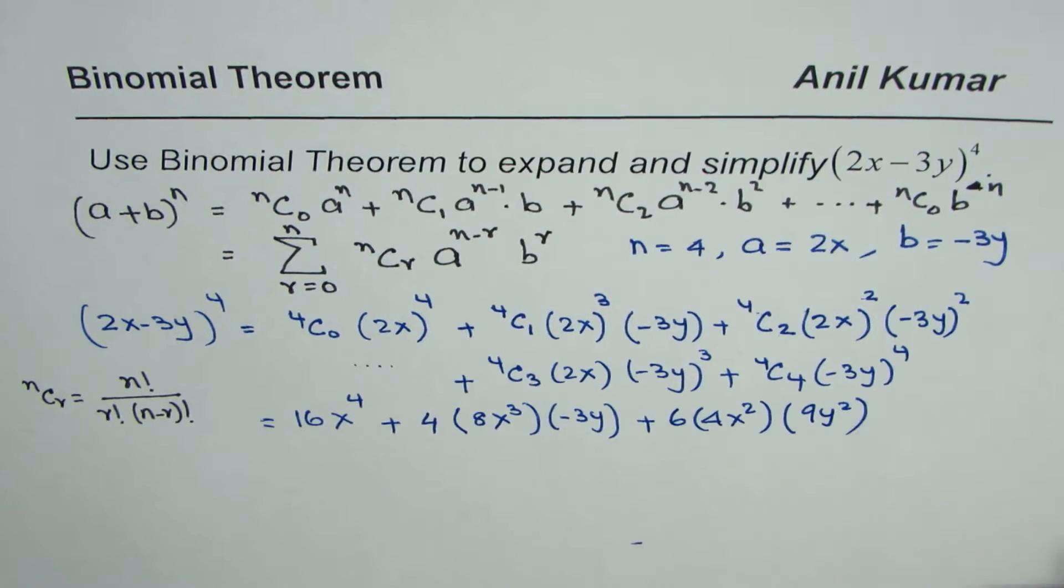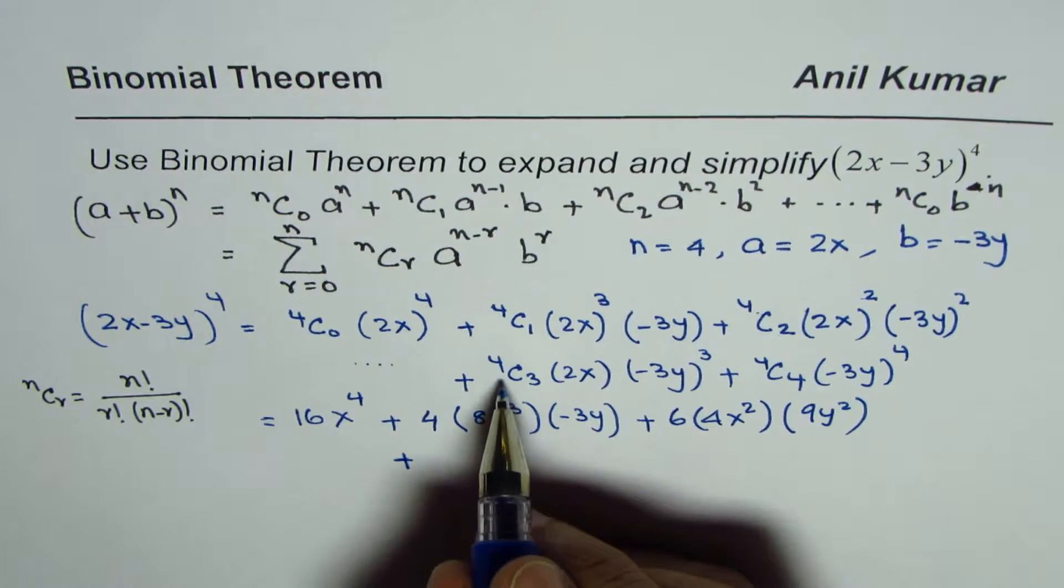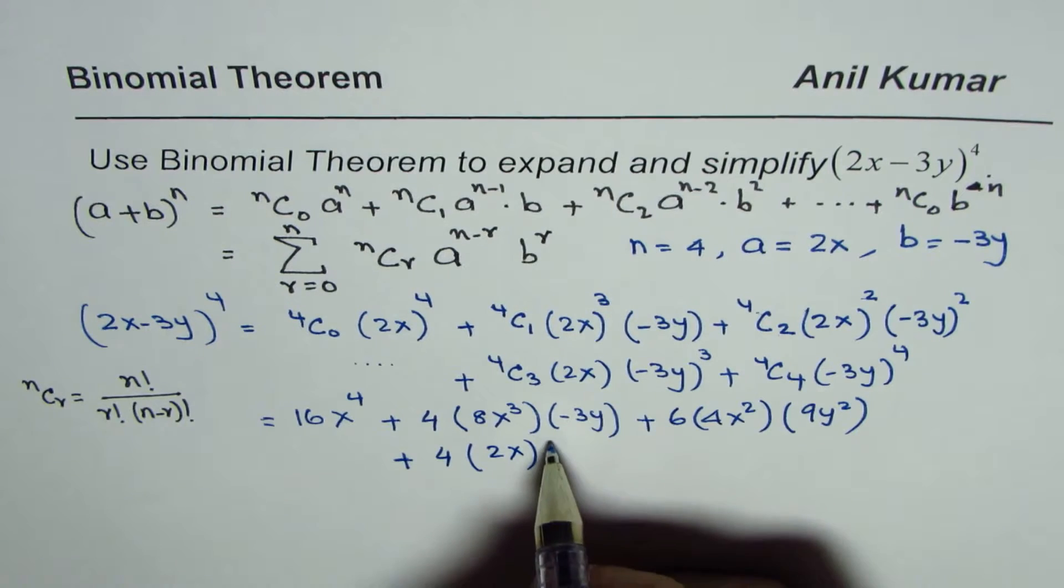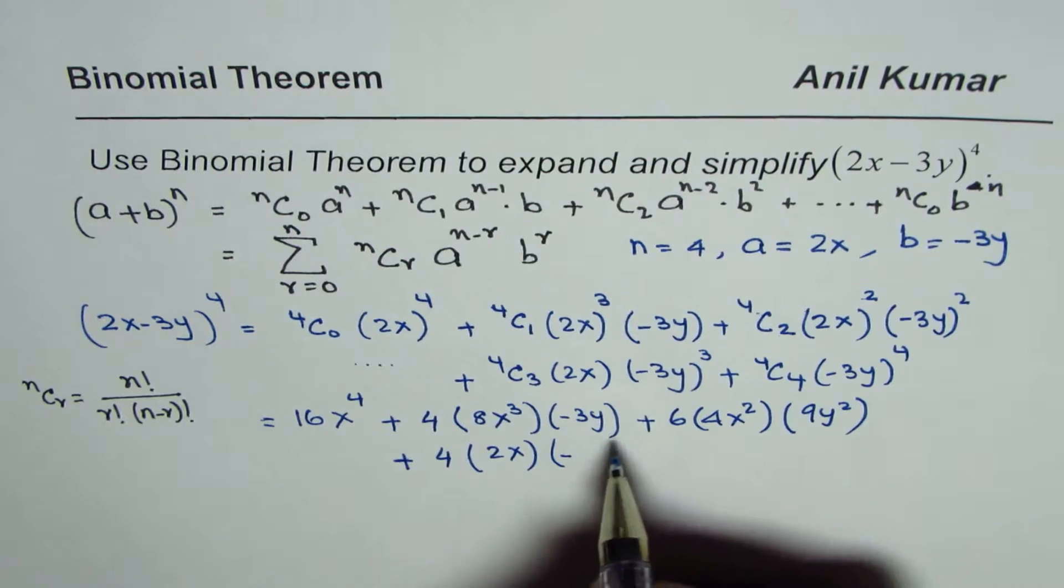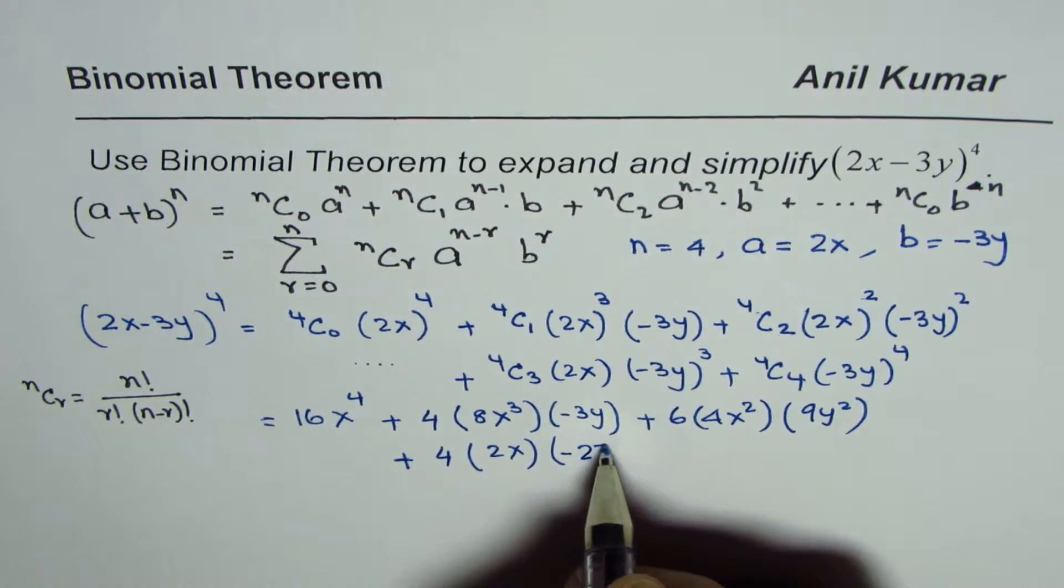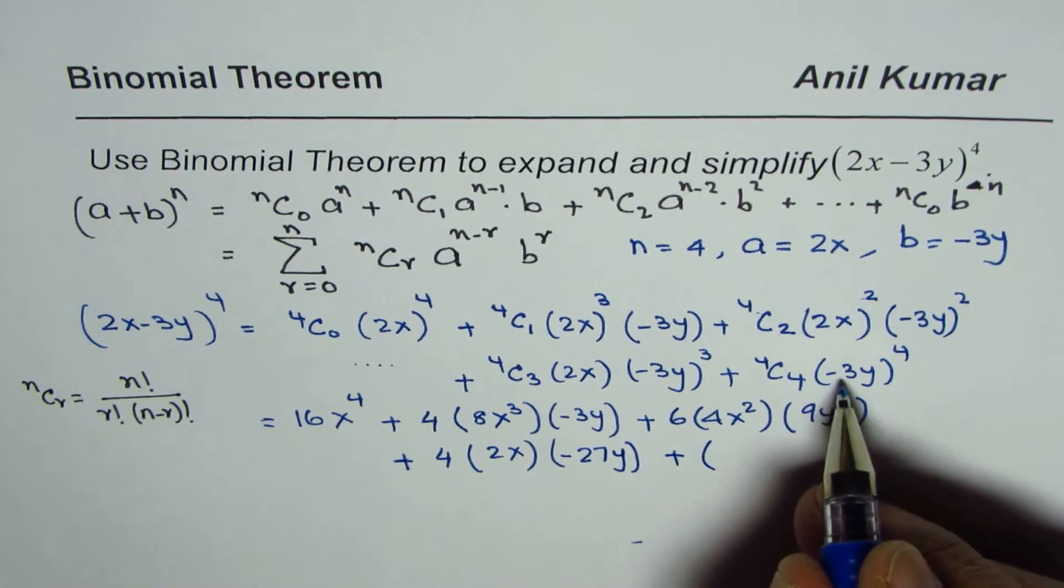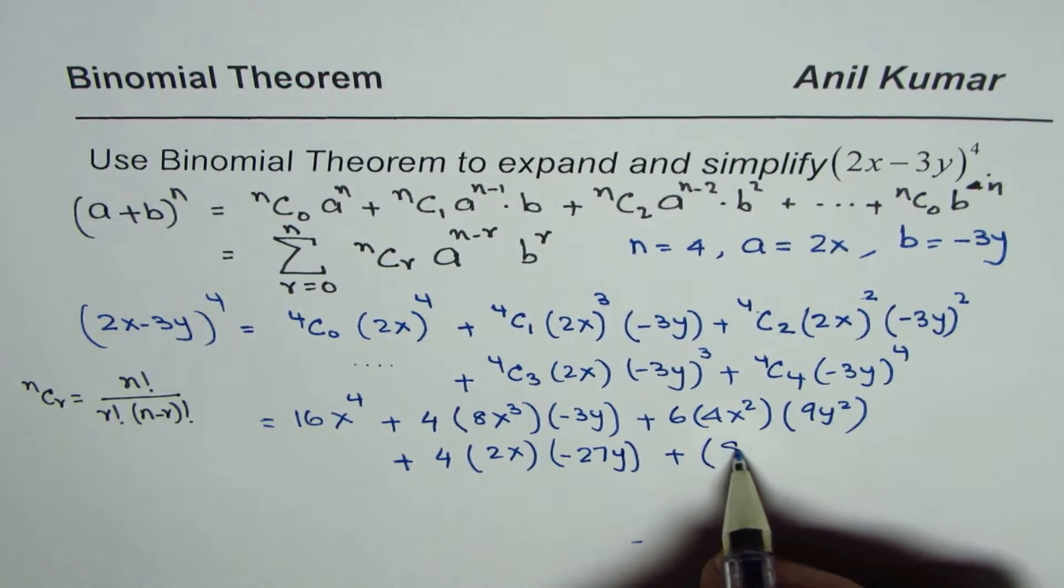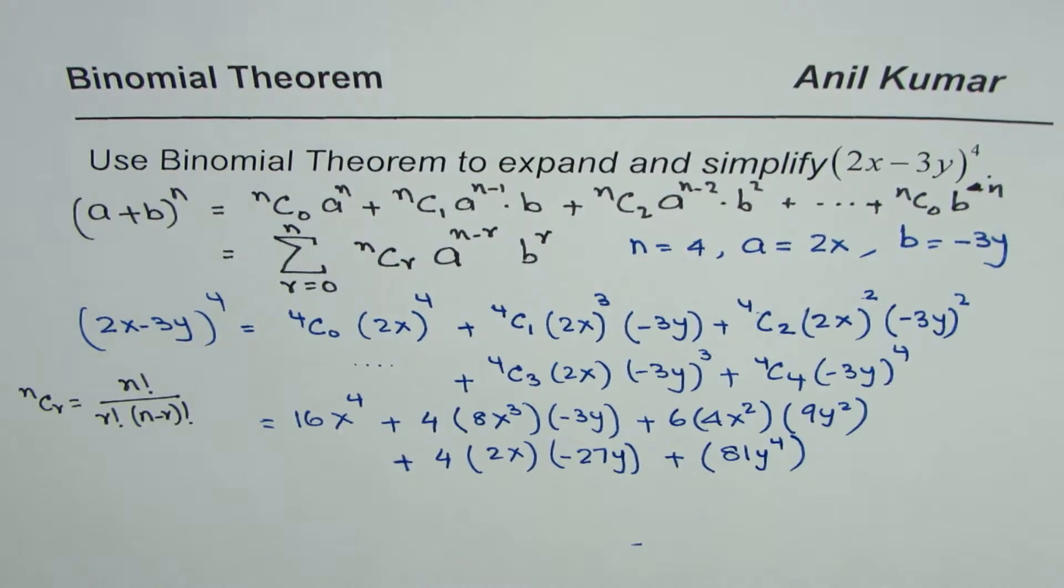Now let us write down the other two terms, so which are for us, let me write here, plus 4C3, 4C3 is again 4, times 2x minus 3. So 3 cube is 27, minus is also minus, so minus 27y plus 4C4 is 1 and we have 3 to the power of 4, which is 81 with a positive sign. So 81y to the power of 4. You should use calculator for all these values.